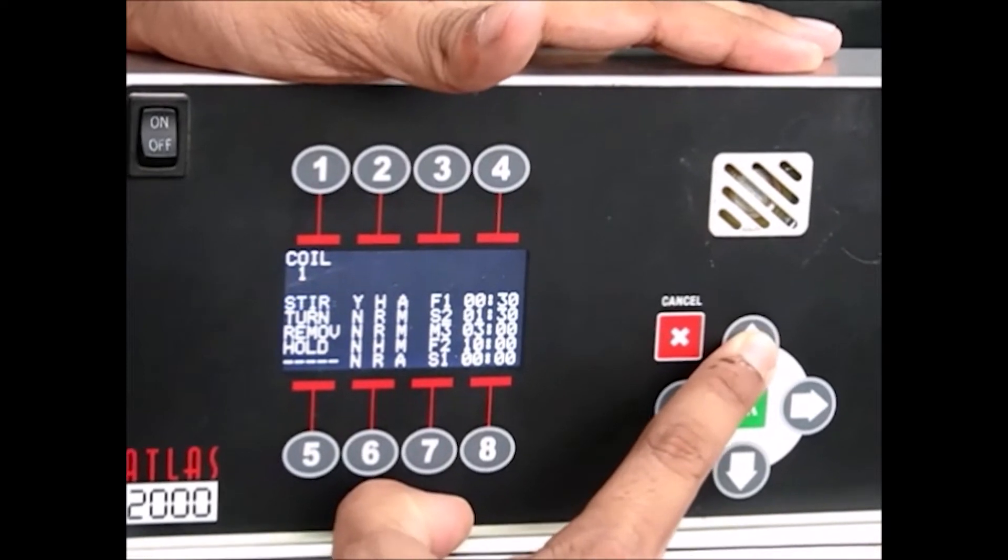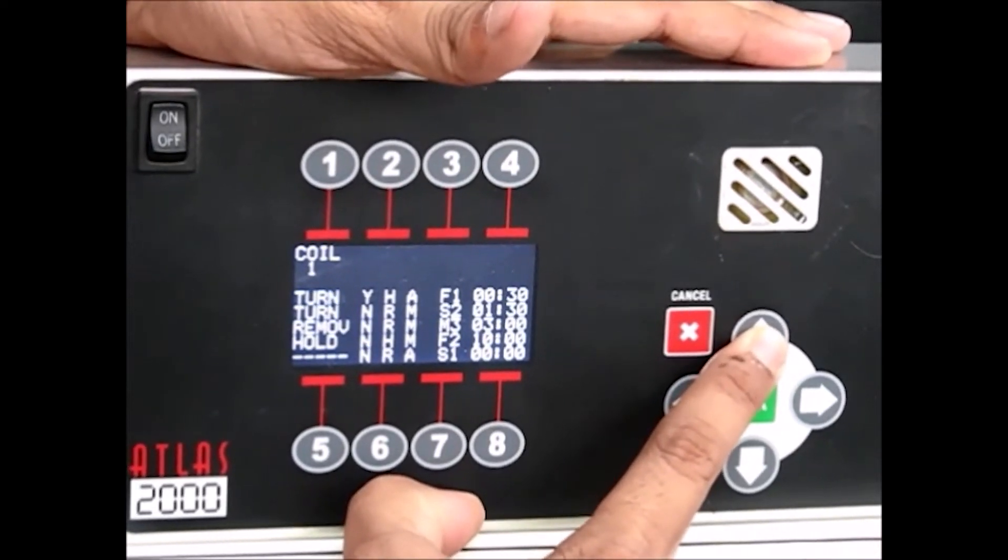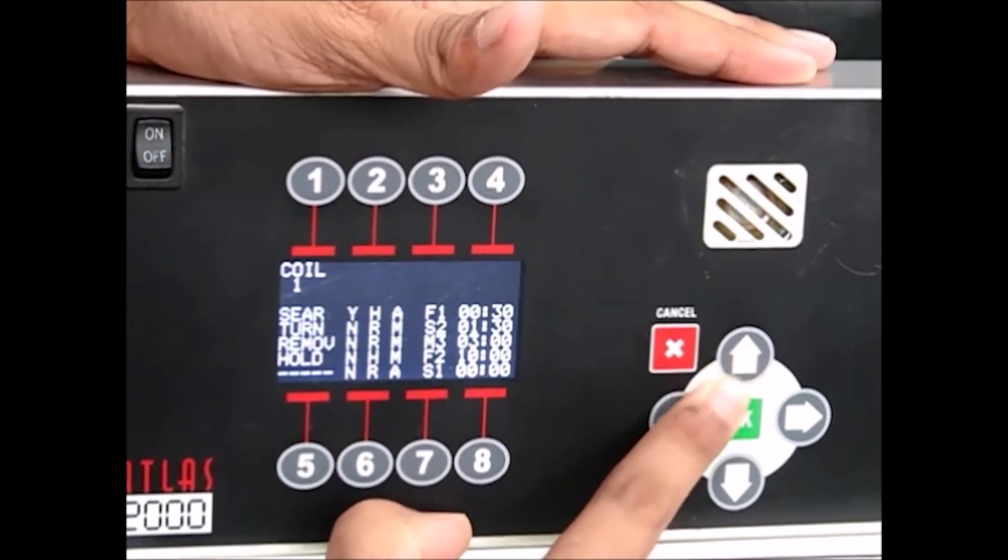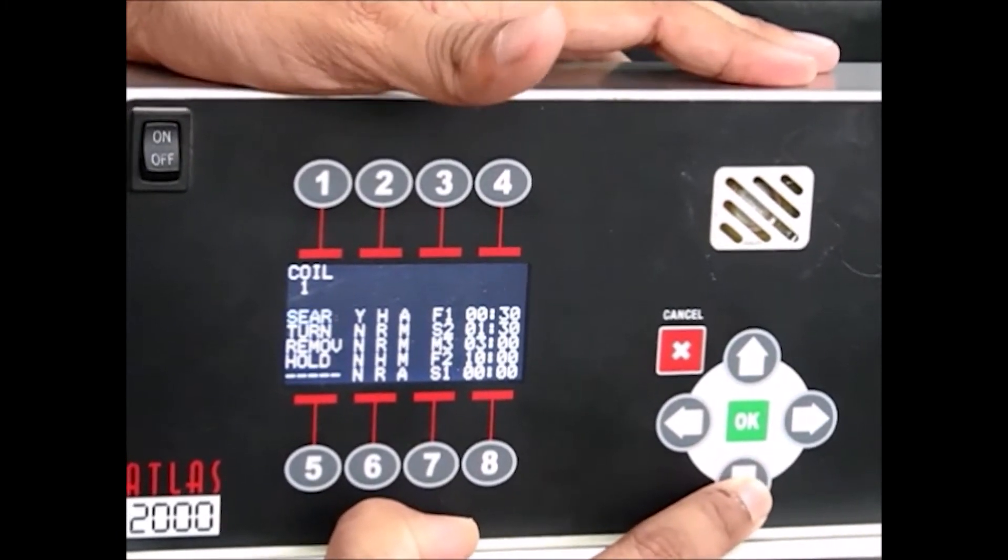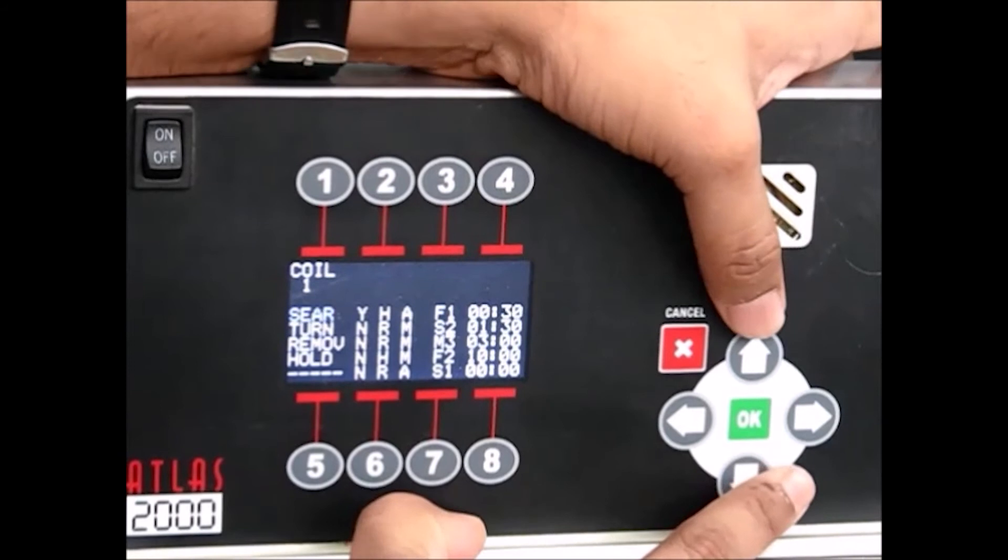Now the entire submenu blinks. Select another parameter by pressing the left or right arrow and placing the cursor over it. Change the parameters by pressing the up or down button.